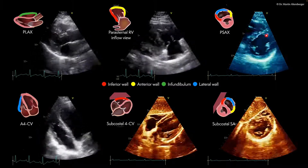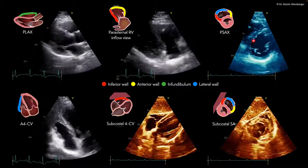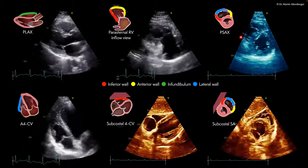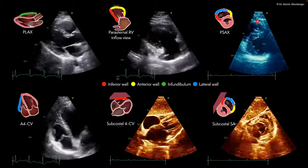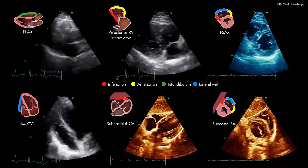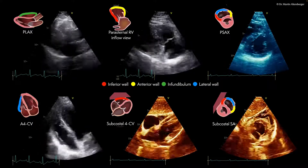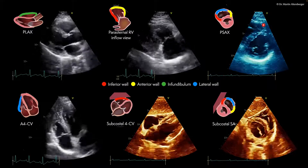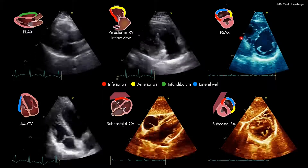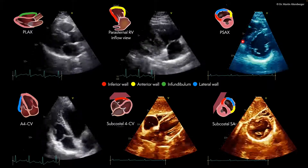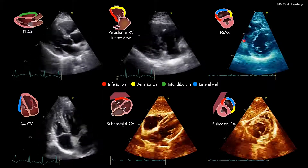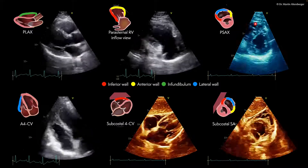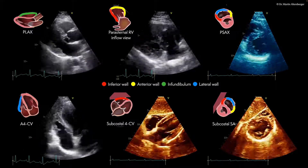Moving on to a parasternal short axis view, we have here the left ventricle in the center of the image, and around the left ventricle is also the right ventricle. Here we have even more walls to visualize: we have the anterior wall over here, the inferior wall over here, and parts of the free lateral wall of the right ventricle.